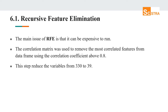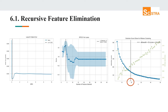The main issue of recursive feature elimination is that it can be expensive to run. One way to reduce the number of features is removing correlated features, as highly correlated features provide the same information. The correlation matrix was used to remove the most correlated features using a correlation coefficient above 80%, reducing variables from 330 to 39. The Yellowbrick library defined the best alpha value as 0.16, which was then used in recursive feature elimination to identify four representative features. These four features were used in K-means clustering, and the elbow technique identified the most optimal K value as 19 clusters.